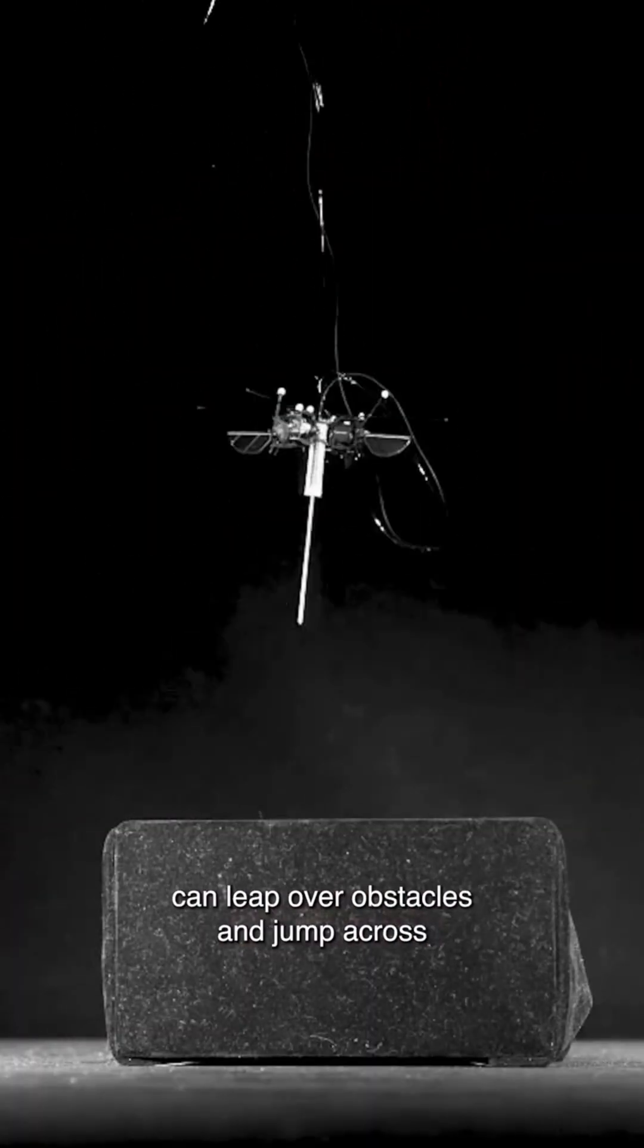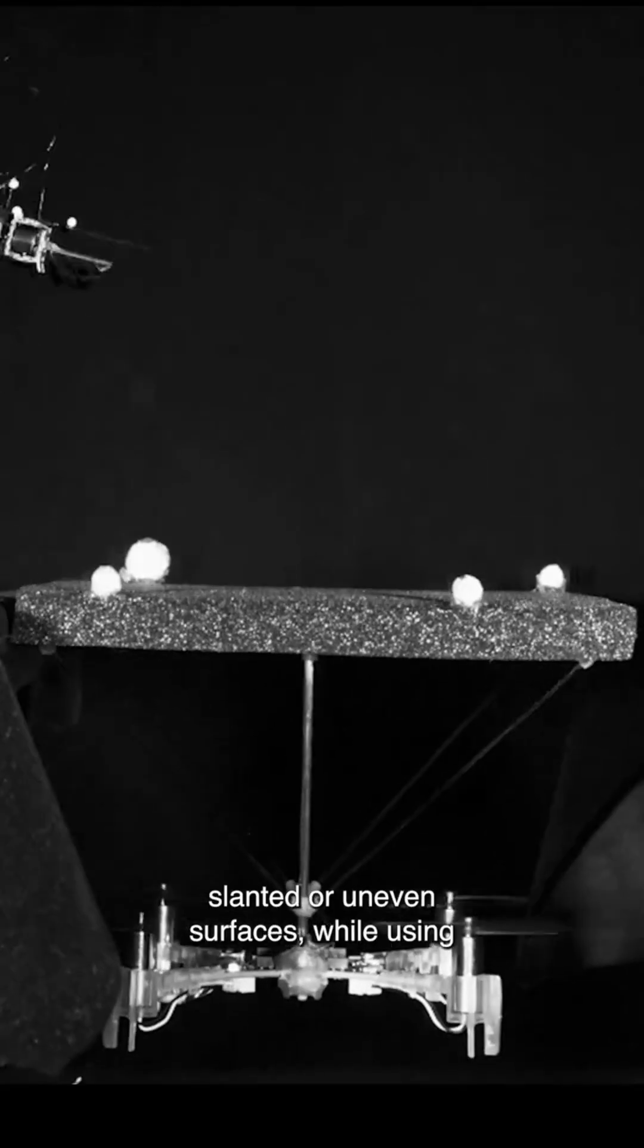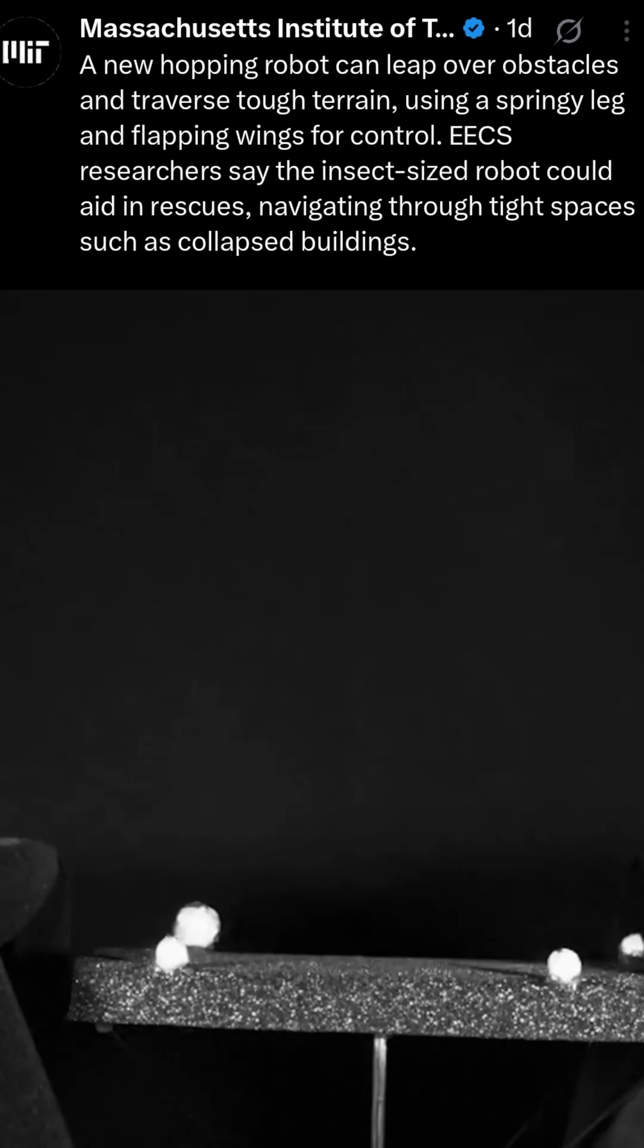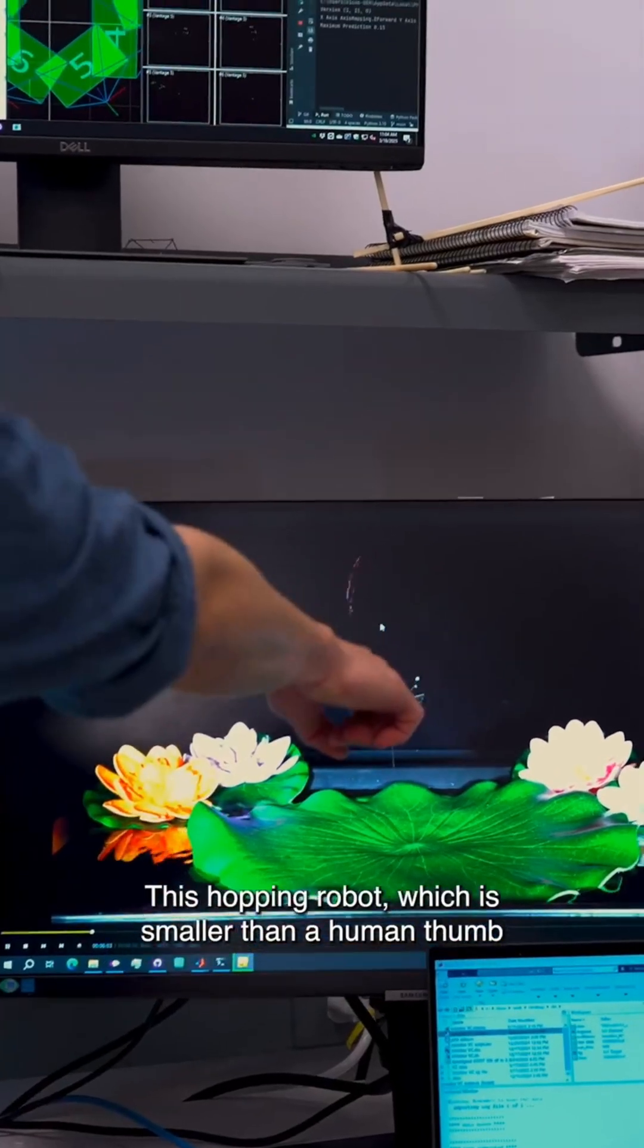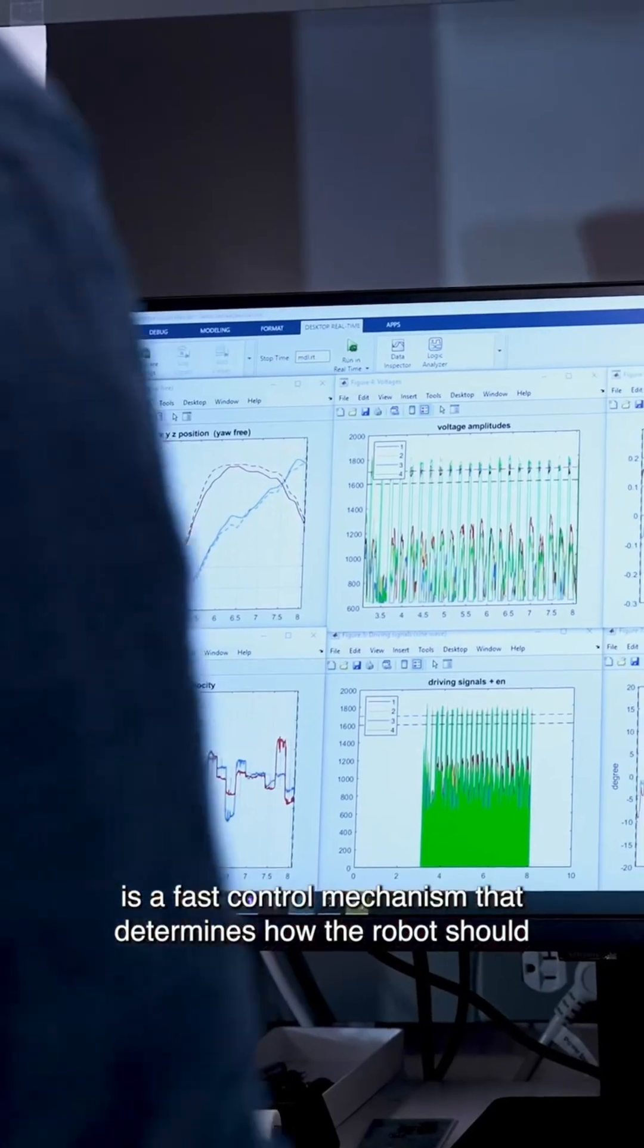The leg propels the robot off the ground while the wings provide lift and control orientation. This design enables efficient movement across challenging surfaces while consuming significantly less energy than traditional aerial robots.